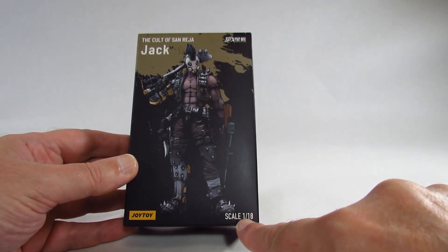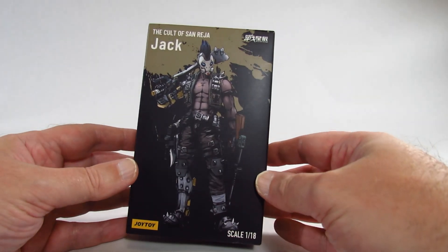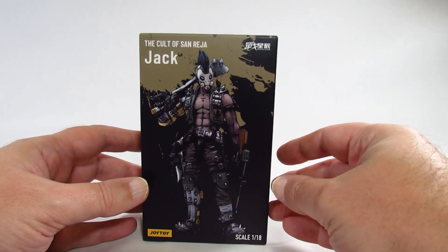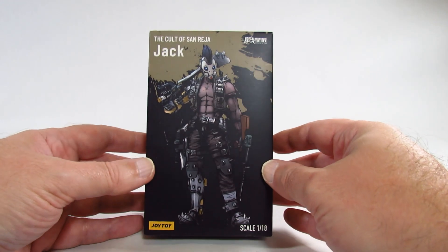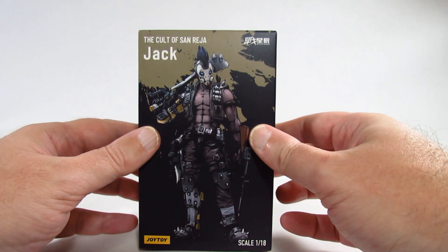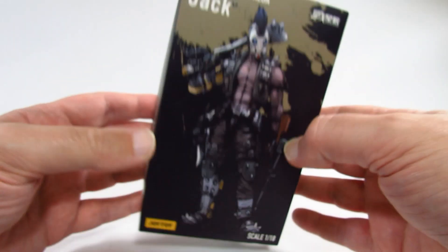This is a 1-18 scale action figure or model, comes in a nice box, although I prefer a window box, but there is plastic in this packaging so we'll see that in a moment. Nice picture on the front here, here is the top, this is JoyToy, here's the bottom, JoyToy.